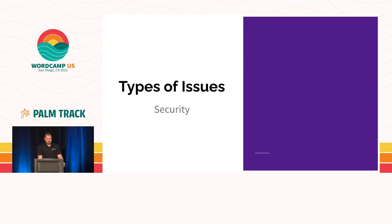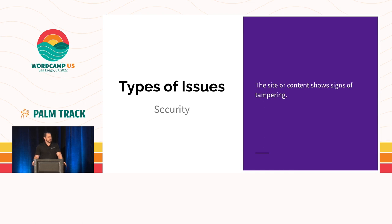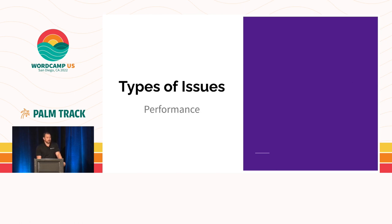Then we also have security issues. Typically, security issues aren't really noticed until there are obvious signs of tampering. If you're running some sort of security plugin, you might be able to pick up on some issues earlier. But typically if you have a security issue, it would be relatively obvious that someone has either hacked your site or there are strange things happening — like your site turning up on Google with weird keywords. Then we have performance — I think most people could probably identify when something is just slow, so that one should be pretty straightforward to recognize.